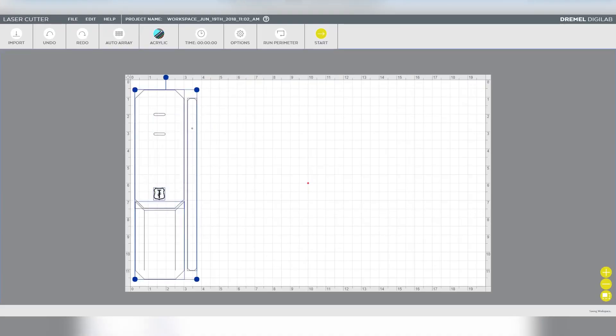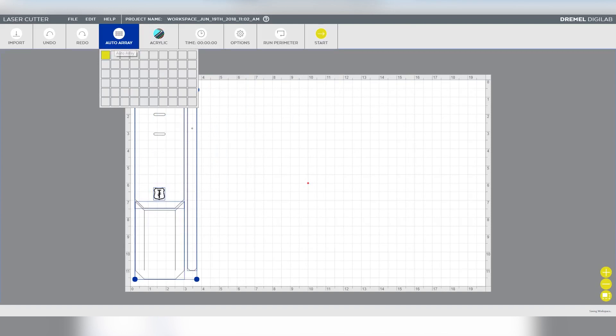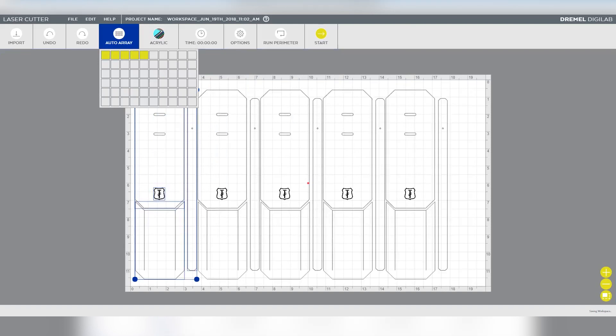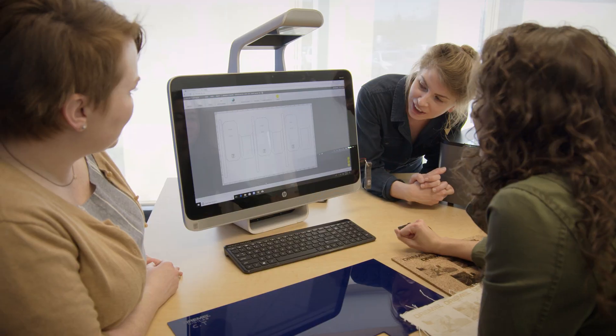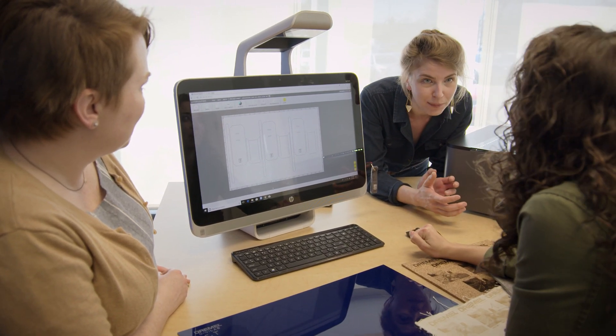Another nice feature we've built in is, now that you have everything imported and where you want it, rather than going back and importing all of those pieces several times to create more than one of them, you can use what we're calling auto array. With just one click you can see that you can fill up the entire bed. That's an incredibly useful feature.